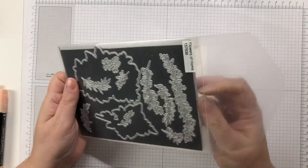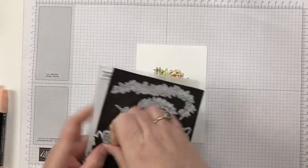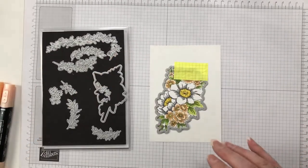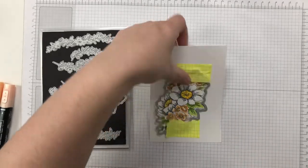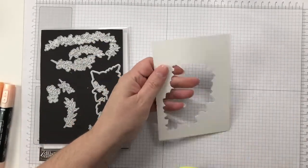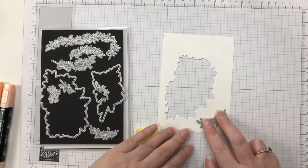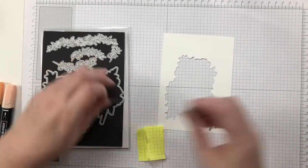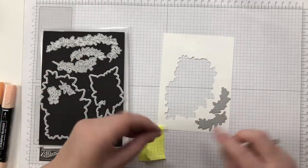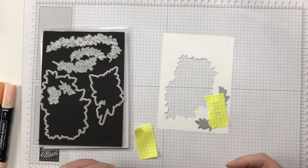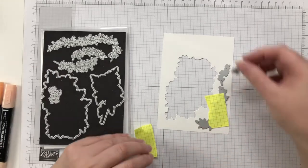And then it's time to do the die cutting. I'm using the coordinating Flowers of Home die cut and I'm cutting out the image. I do use a post-it note most times when cutting out something like this because I would hate to do all that coloring and have the die slip, especially if your plates are getting a little bit warped.